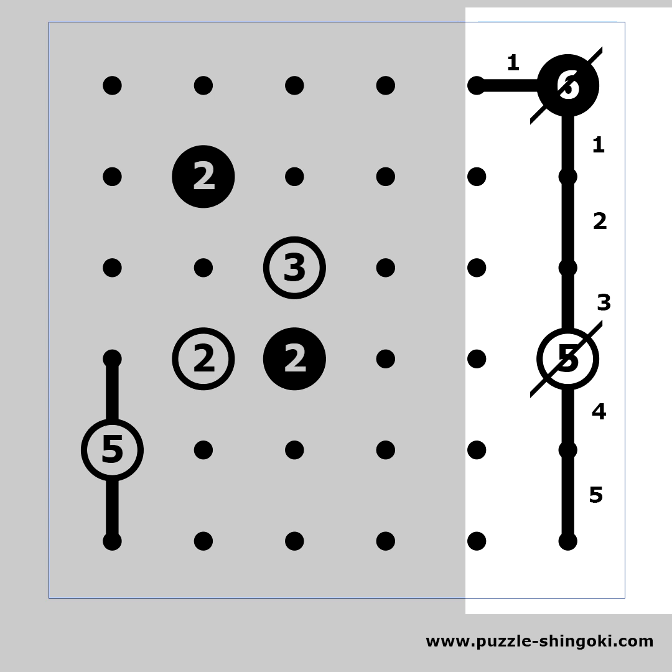When a clue is completed, the lines which come out of the clue cannot continue any more in a straight direction, as they will become longer than required. This means that the lines should make a turn.